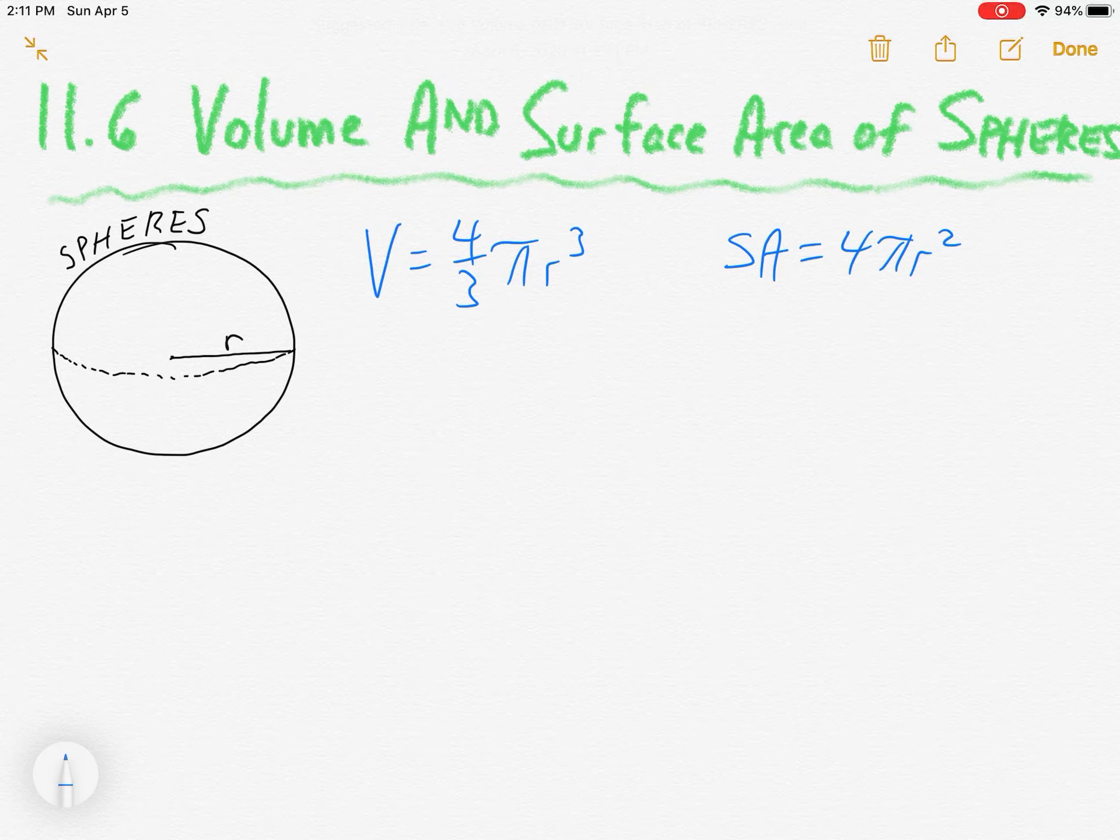Now that one surprises me a bit. 4 pi r squared, it's got to be squared, it's an area dimension. Pi r squared is the area of a circle. This is 4 times the area of a circle.